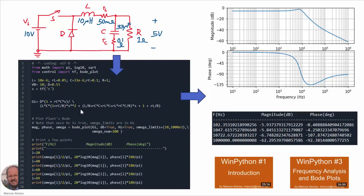We can use WinPython to represent the Bode plot of the audio susceptibility transfer function. Here we have the different parameters, the transfer function, and the plotting code. We are also printing several points for comparison with simulation results. The output shows the magnitude and phase of the transfer function, along with several specific data points. If you are not familiar with WinPython, there are two videos available on how to install it and how to use it for plotting Bode diagrams.